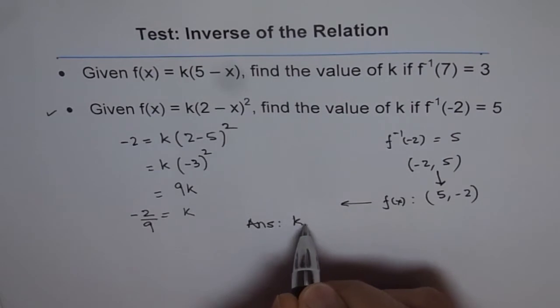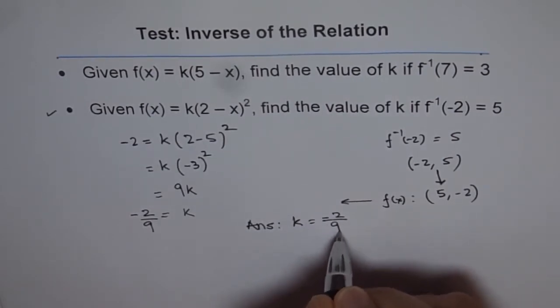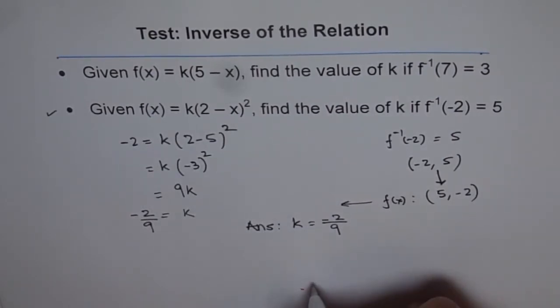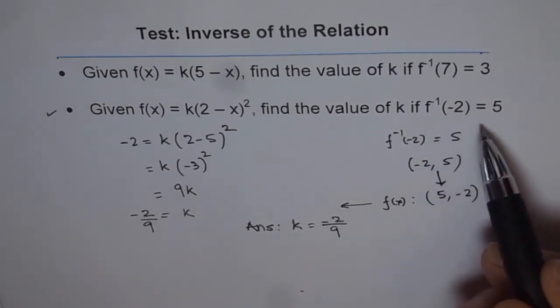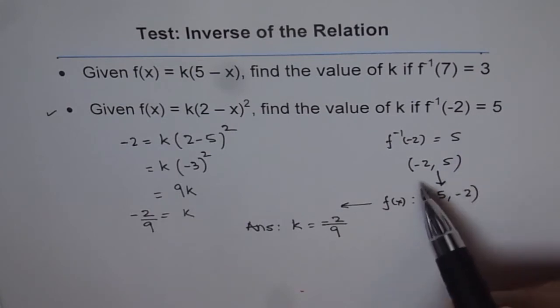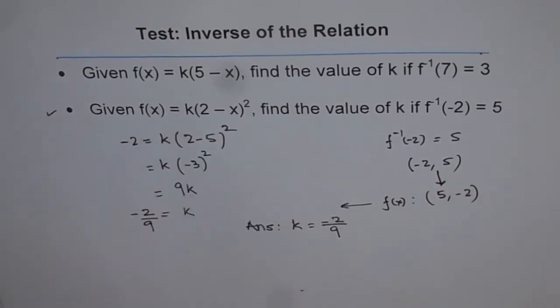That's it. Do you understand? So this is the concept: a point on the inverse function is given to us, you flip it or swap it, and then you know the point on the function. Plug that point in and find the value of the constant which is unknown.